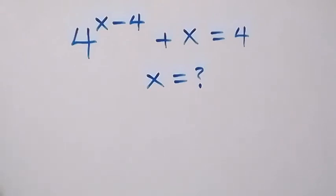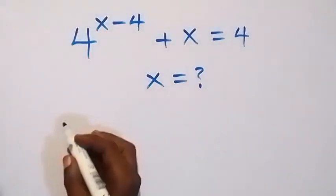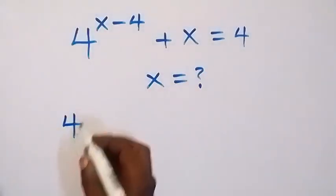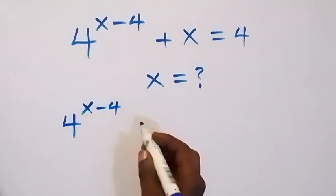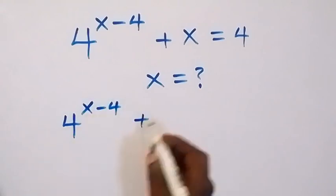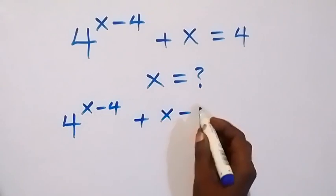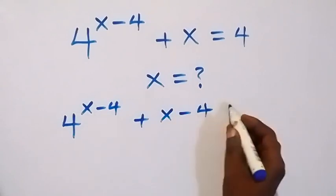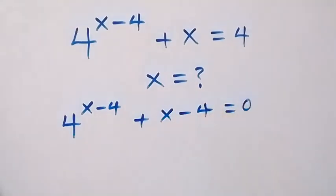From here, let's take 4 to this side and this I'm writing as 4 raised to the power x minus 4, then plus x minus 4, now equals to 0 from here.